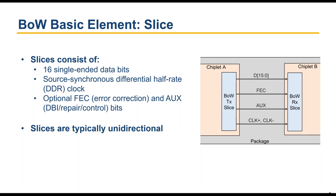There's nothing stopping a configurably bidirectional slice, but the standard is built around the default assumption that slices will be unidirectional. The slice is the most basic unit of BOW, which means you can build up almost anything by taking various versions and configurations of slices. This gives very good granularity simply by choosing the number of slices, rather than being constrained to, say, a factor-of-two variability in a fixed-width interface.